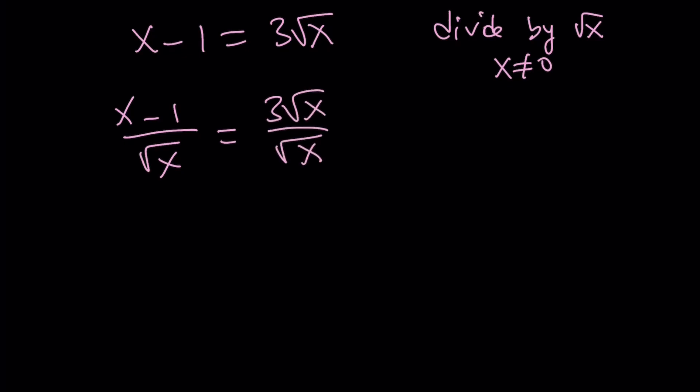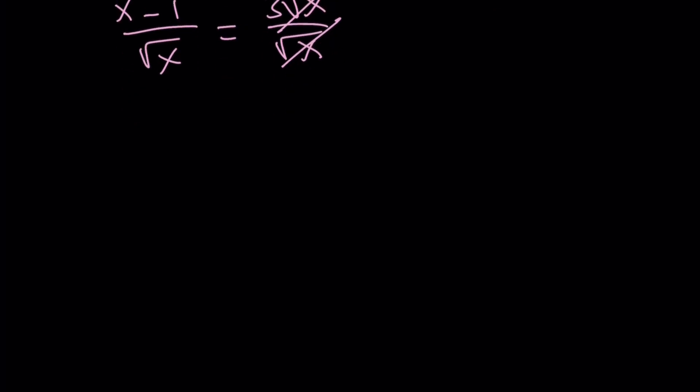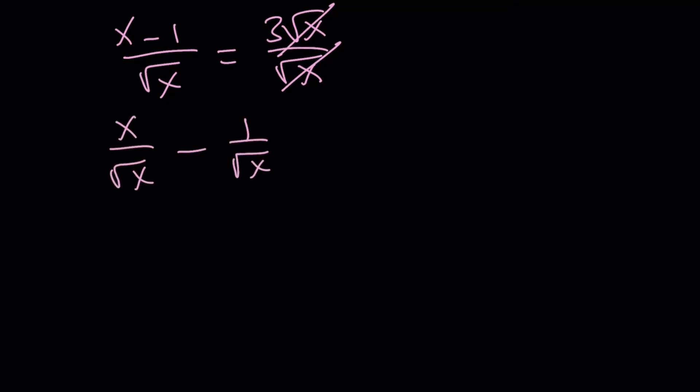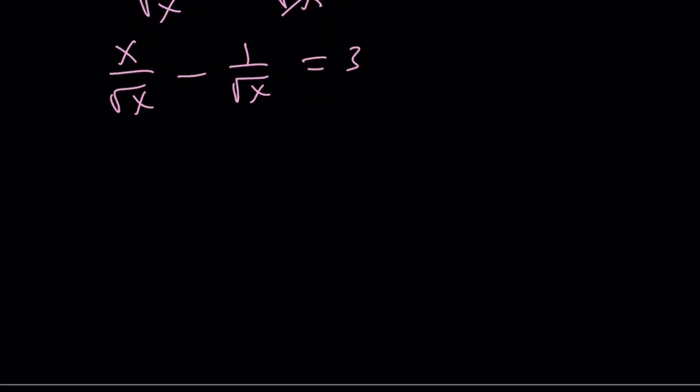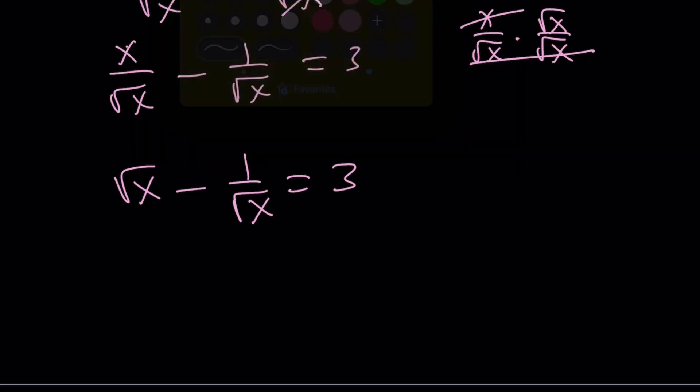First of all, we'll get rid of the radical on the right-hand side. And second, we're going to have a nice expression when we separate these. Let's go ahead and split it up. x over root x minus 1 over root x equals 3. But what is x divided by square root of x? Just multiply it by conjugates, and you're going to get x here, and you're going to end up with square root of x. So it's square root of x minus 1 over square root of x equals 3. What am I supposed to find? x squared plus 1 over x squared. Let's go ahead and square both sides.